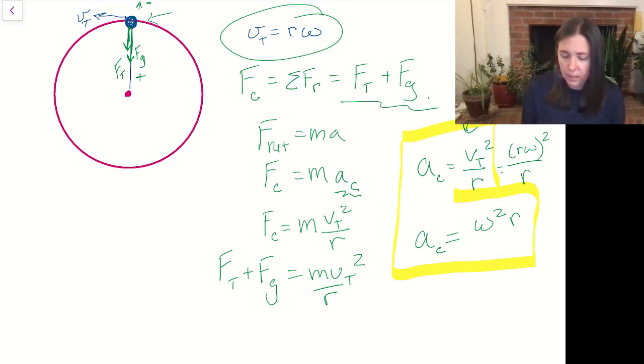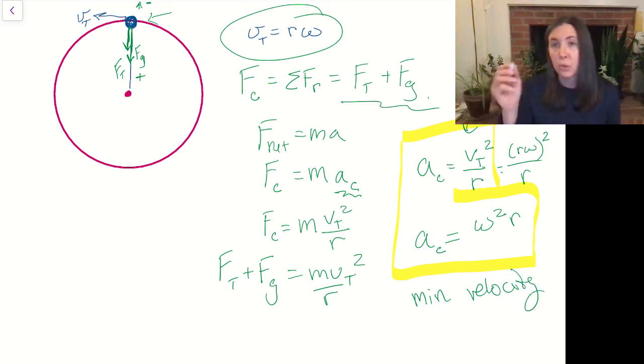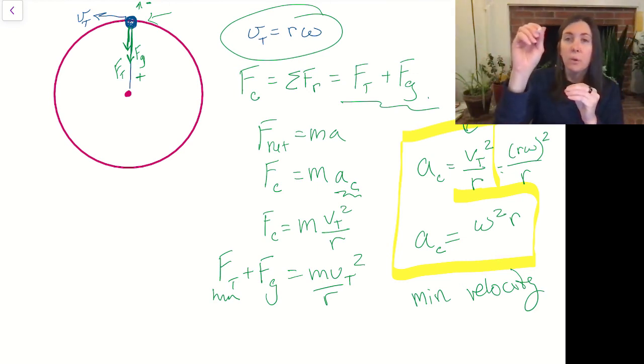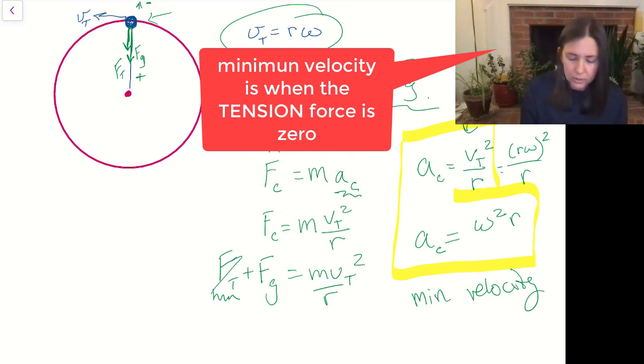So if I wanted to find the minimum velocity that this ball traveling in the circle can have, that is the velocity with which the force of tension becomes zero. So that force of tension decreases. The minimum velocity is when that tension force is zero. So we can set that to zero.